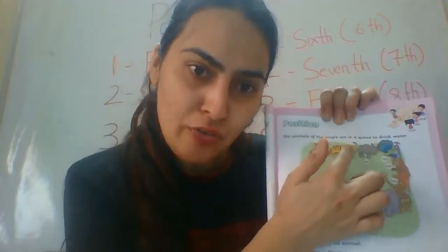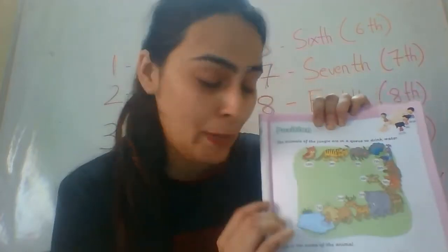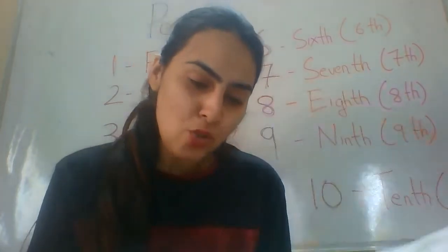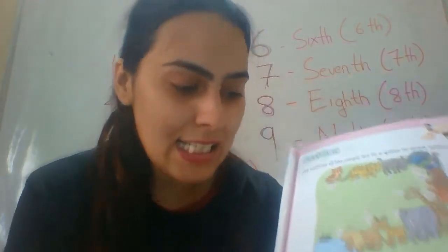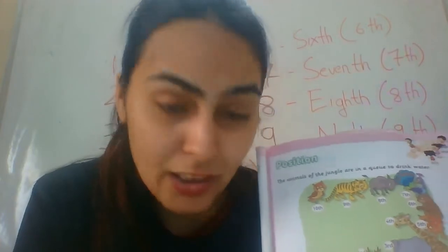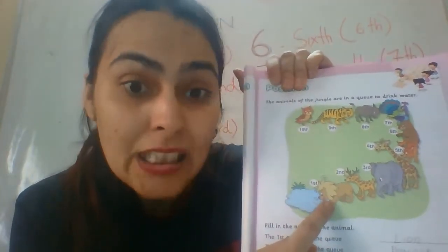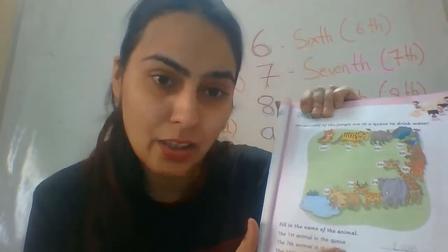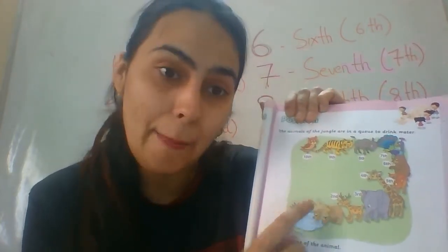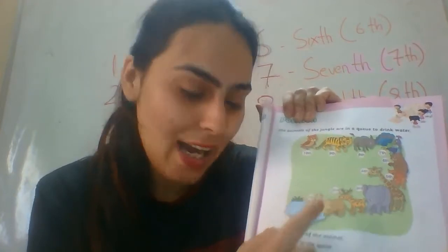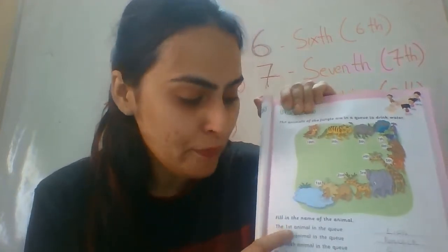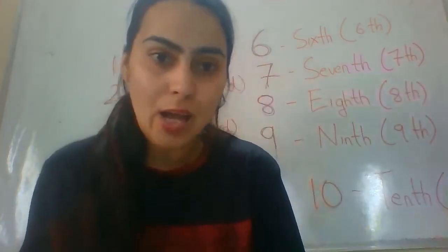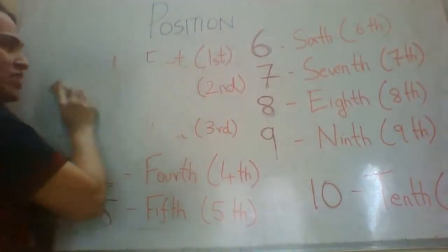There are ten animals standing in positions and we have to fill in the blanks. The first question asks: what is the first animal in the queue? The first animal — humara sabse pehla animal — is a lion. So we will write lion, because lion is at the first position. The answer for the first question is: the first animal in the queue is lion — L-I-O-N.